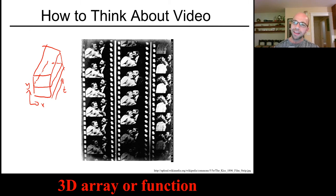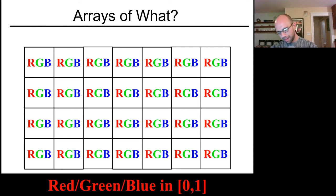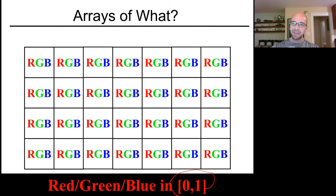When we talk about images or videos, we have to say what's contained in these arrays. The typical answer is that our arrays contain RGB values — three color values that can reproduce most of the visual content we're used to seeing, even though the world really has continuous spectra of light energies. But most common image formats don't just store RGB; they also store a fourth value.